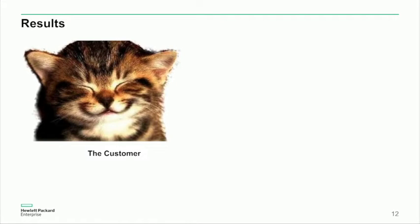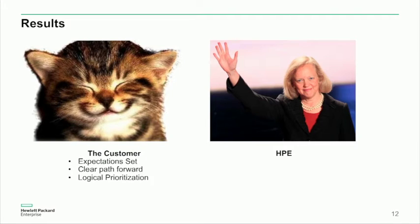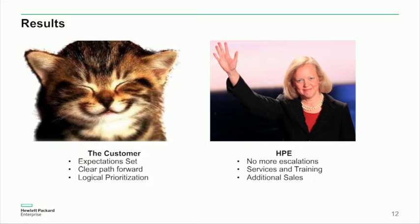The result of that first case study: the customer was now happy, no more escalations, and the software team was able to move forward. The key value sets were: expectations of how the software is supposed to work were now set; they had the picture on the front of the puzzle box and knew which areas to build next; and there was a logical prioritization process because we found the root causes. On our side, we were able to turn a really negative situation into a positive one, and we saw more business as a result.